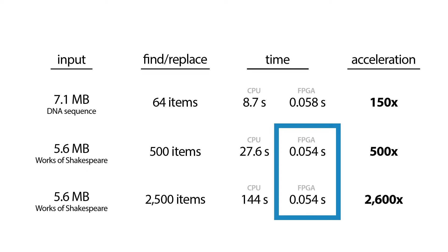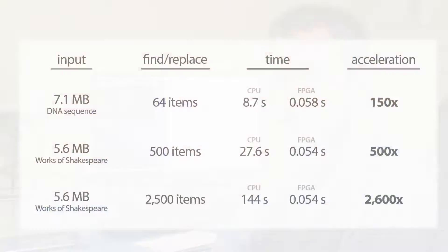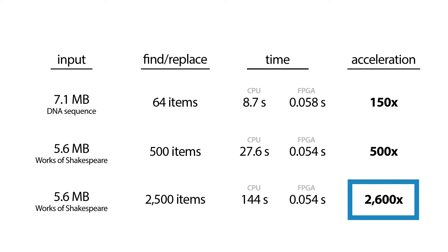So 500 search terms, 2,500 search terms, doesn't matter. It's still 54 milliseconds. So relative from the FPGA to the CPU, it's actually thousands of times faster for this particular demo.